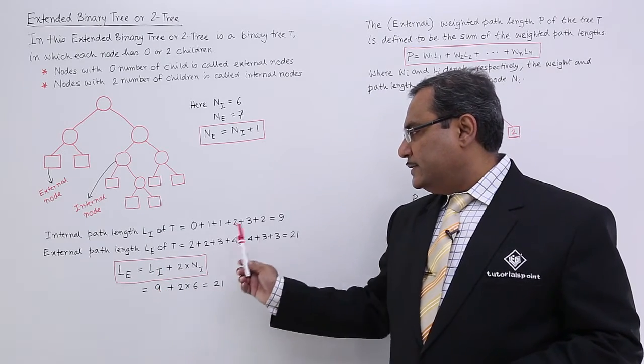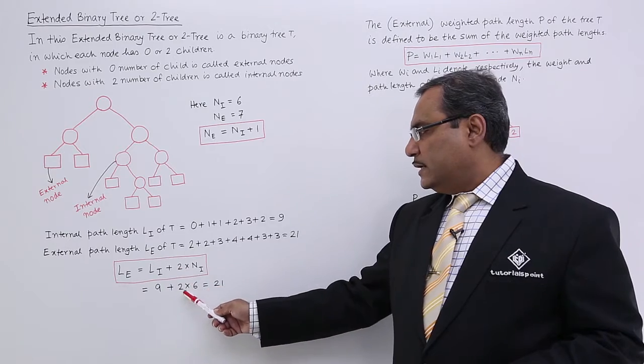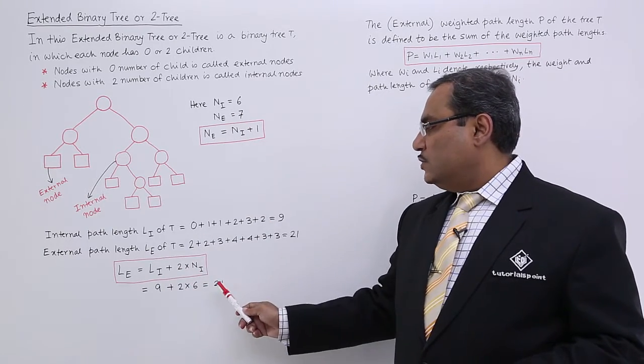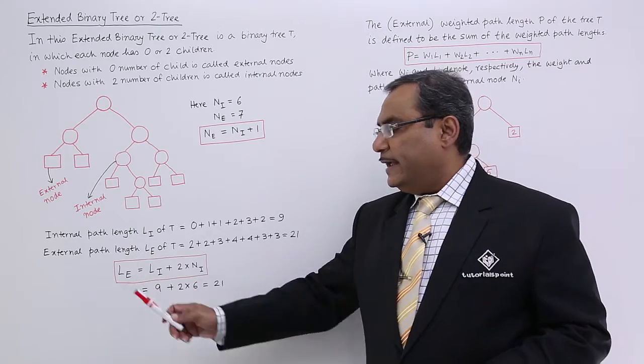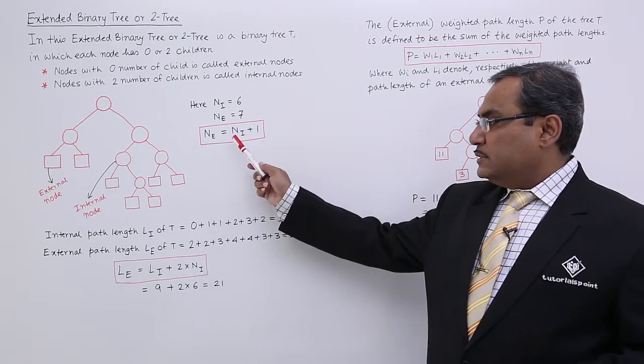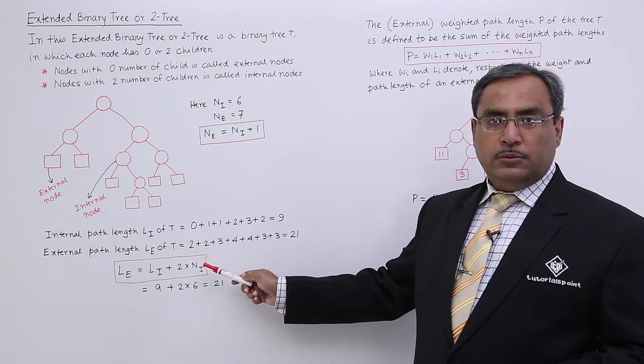So here in this case if you put LI is equal to 9, 2 is there and NI is equal to 6, you are getting 21 which is matching with this LE. So 2 equations I have marked them separately which you will have to remember.